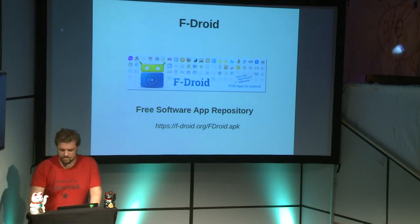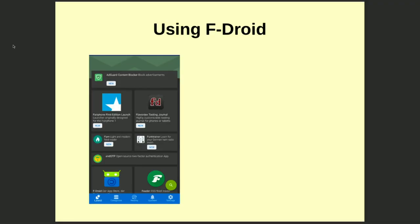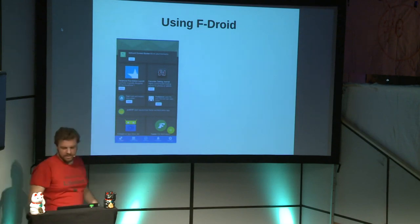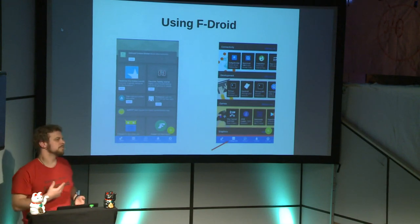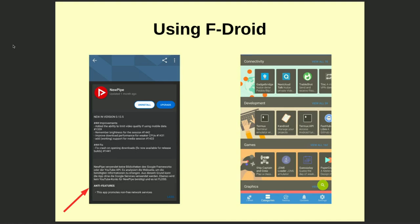Once you have it installed, the first screen shows the latest and newest changes to the repository — either the newest app, or updates to already existing apps appearing in a tile-based stream. You also have a search function to look for apps, and a category section where you can browse by topic — games, development, office, or whatever category you're looking for — to see all the apps available.